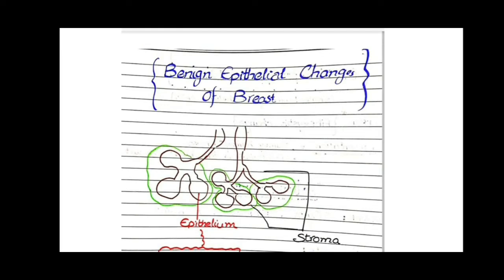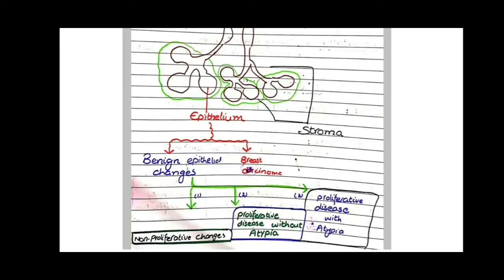The topic of our concern — benign epithelial changes of the breast — is not related to the stroma; stromal lesions will be discussed further in this playlist. We will be discussing the epithelial changes, which can be classified into benign epithelial changes or malignant epithelial changes, the latter called breast carcinoma.